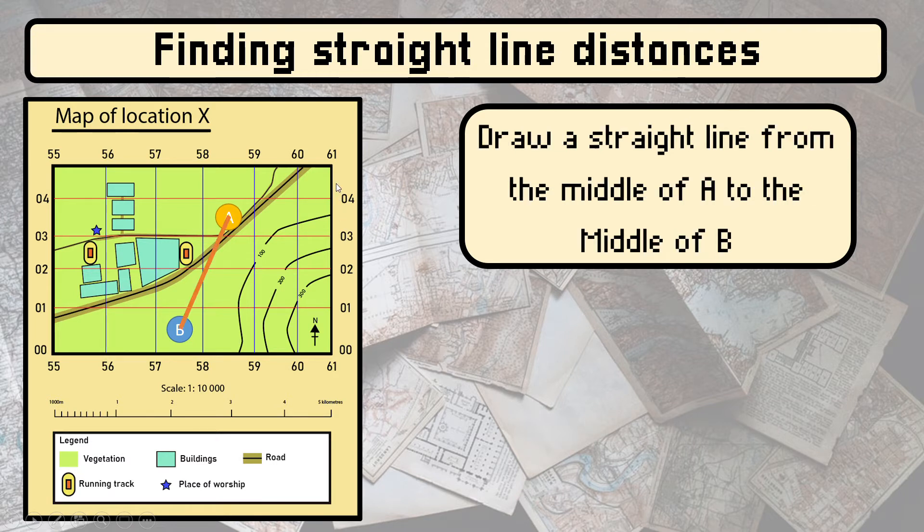Firstly, you have to draw a straight line from the middle of A to the middle of B. You can see that the line in orange here is a straight line from the middle of A to the middle of B.